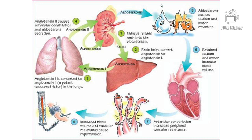This is the detailed pathogenesis of hypertension. The kidneys release the enzyme renin into the blood. Renin converts angiotensinogen to angiotensin 1, which is then converted to angiotensin 2. Angiotensin 2 causes secretion of aldosterone, which causes sodium and water retention, increasing blood volume and thereby increasing blood pressure.